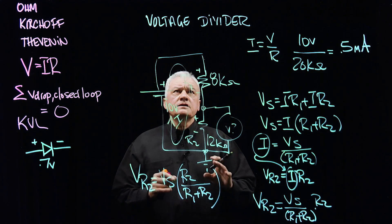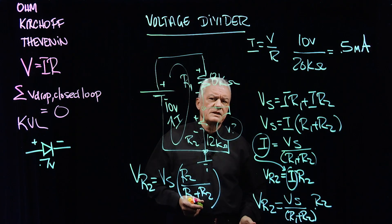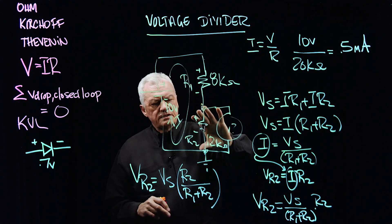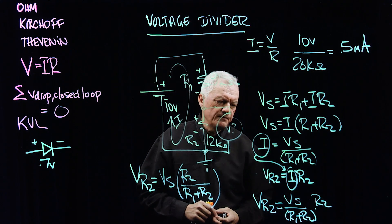So again, just voltage divider, and this is going to be used all the way up to your final semester in your designs. It's simply this resistance over the total resistance times the source voltage will give you the voltage across that particular point. Thanks.